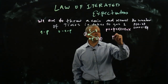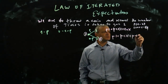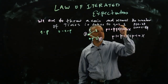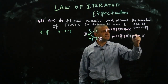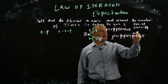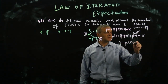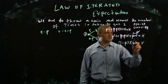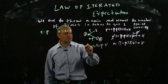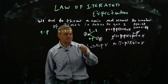Setting up the equation: p times one plus one minus p times (x plus one) equals x. Sorry — it's one minus p, not p minus one. Expanding: p plus one minus p times x plus one minus p equals x. Simplifying, one minus p times x cancels with x, leaving one equals p times x, so x equals one over p.